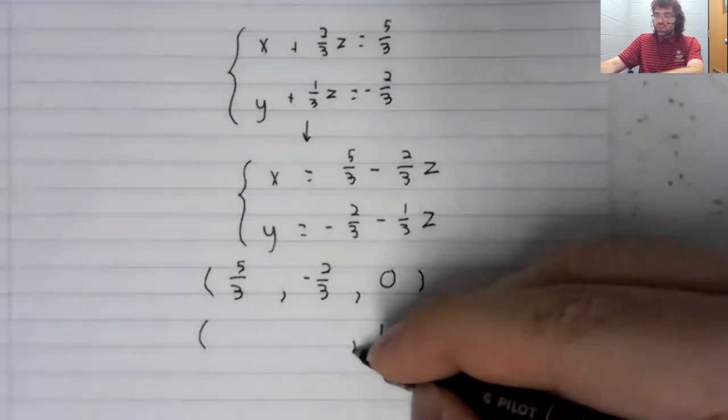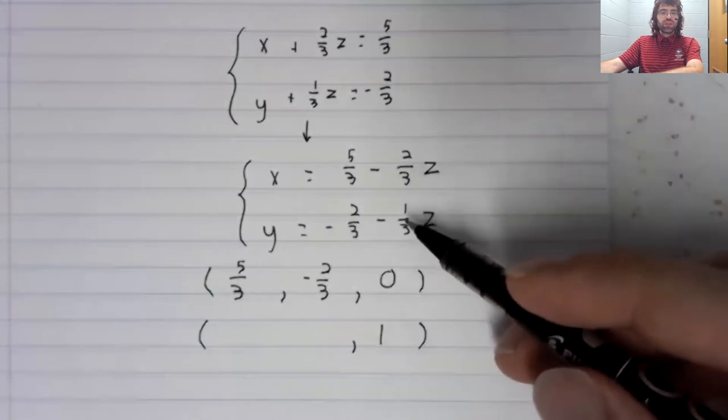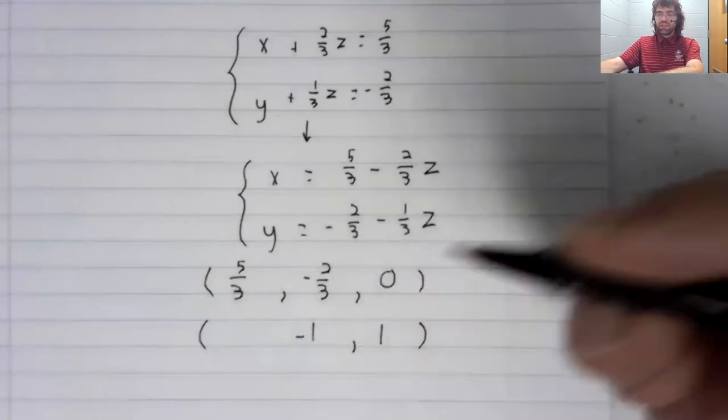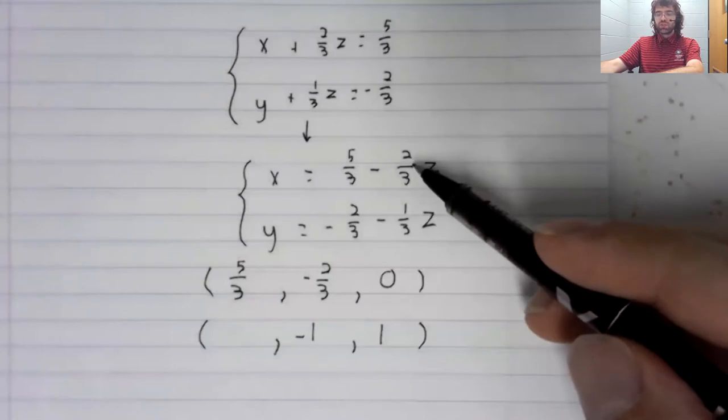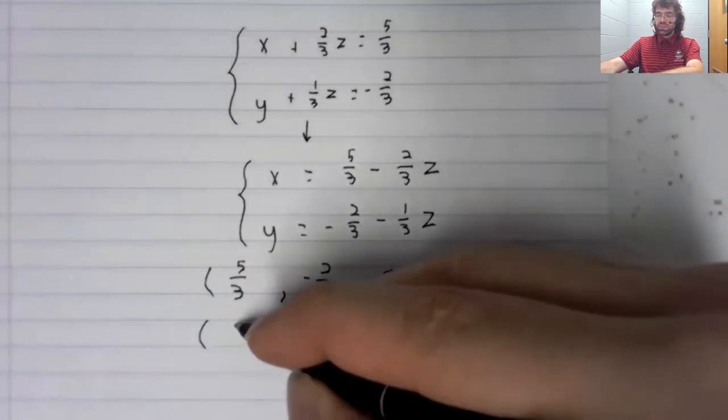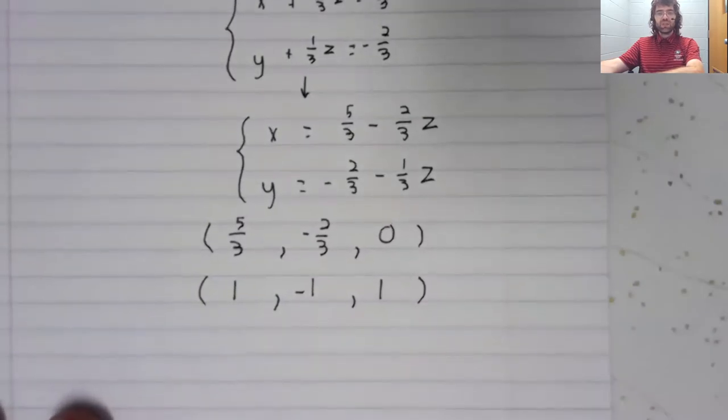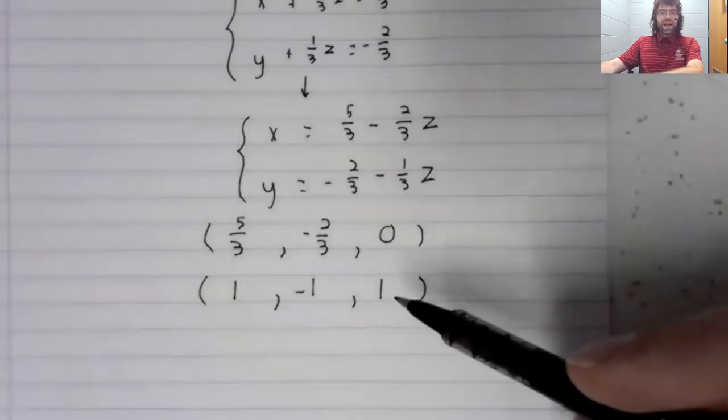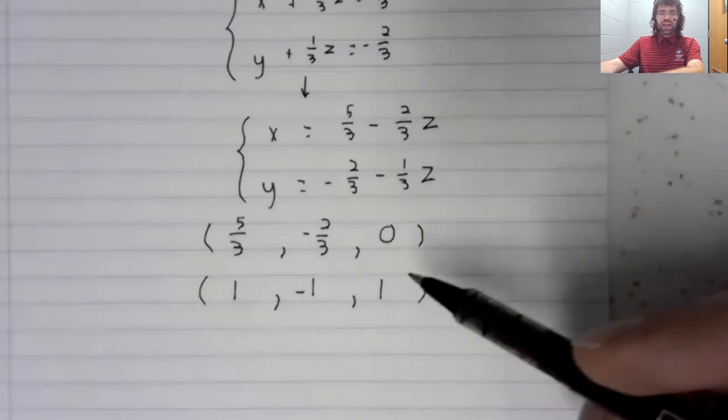And once you've decided that z should be one, the second equation tells us what y needs to be, and this first equation tells us what x needs to be. So you can let z be any real number and get a solution. And of course,